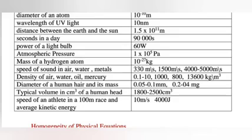They might ask you the density of air, the density of water, oil and mercury, which have respective densities of 0.1 to 10, 1000, 800, and 13,600 kg/m³. They can also ask you questions like the diameter of a human hair, as well as its mass. The diameter of a human hair is around 0.05 to 0.1 millimeters. Or the typical volume in cubic centimeters of a human head, which is something around 1,800 to 2,500.